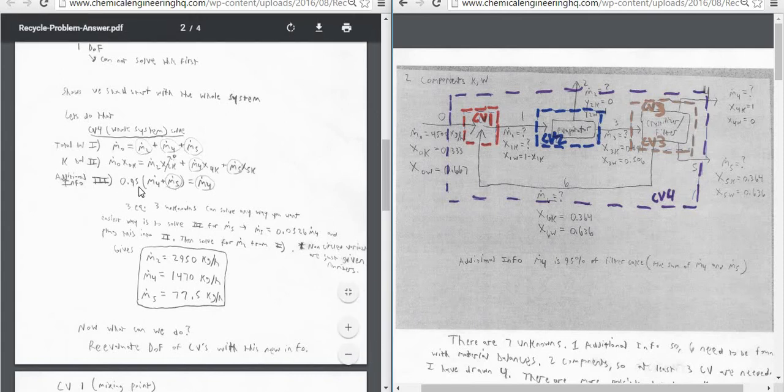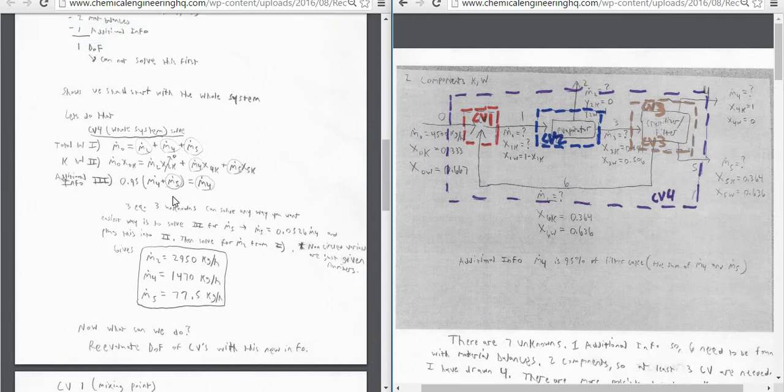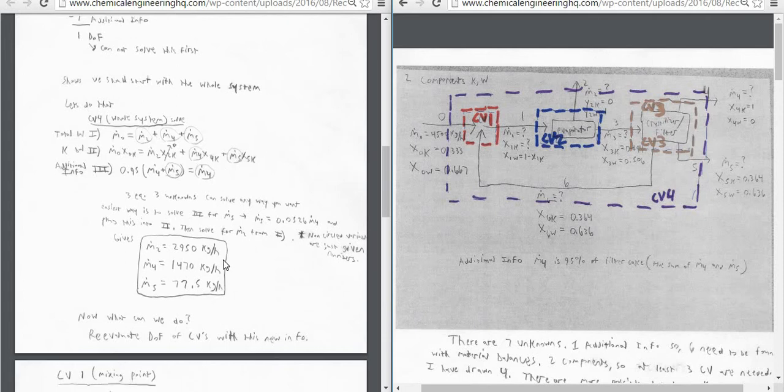And for the additional information, 95% of the total of M4 and M5 is going to be M4. So 95% of what comes out of the crystallizer or filter is going to be filter cake, which is M4. So if you look at this, we have three equations, three unknowns. We can solve them. You can put them in a solving software, or if you could just replace one and then plug it in, like doing these two, number 2 and number 3 together, would solve it for M4 and M5, and plug those into the total balance.